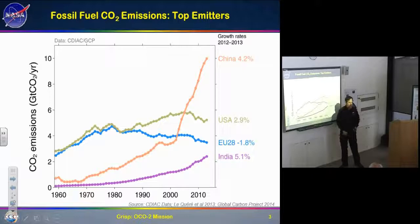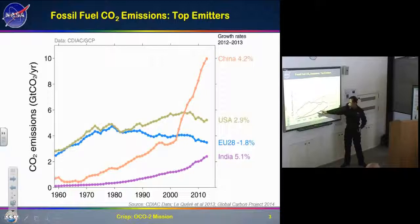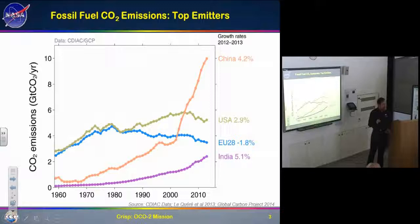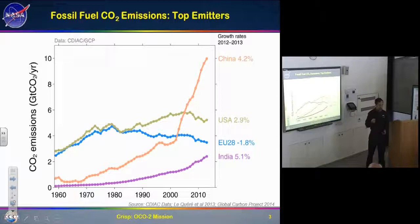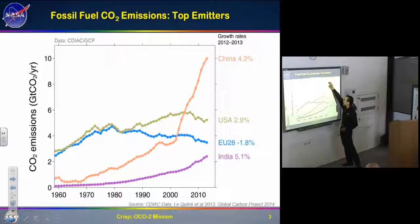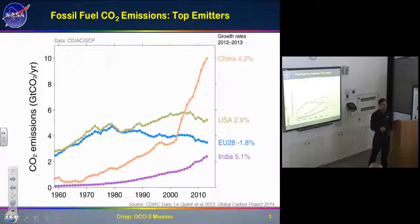Then look at the developing world, particularly China. Back when we started the Orbiting Carbon Observatory mission, China was following everyone else in its fossil fuel emissions, coming up slowly. But soon after we began, China started increasing its fossil fuel consumption substantially, to the point where it's now releasing more than twice as much carbon dioxide into the atmosphere every year as the USA.